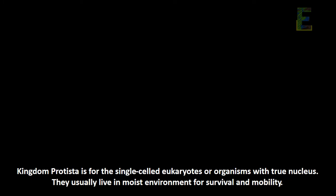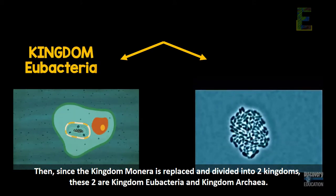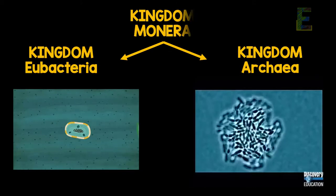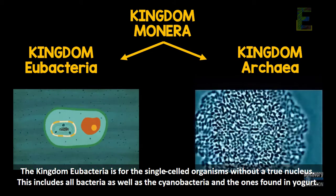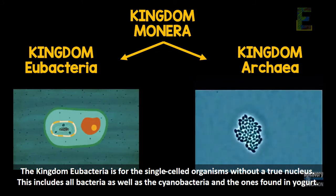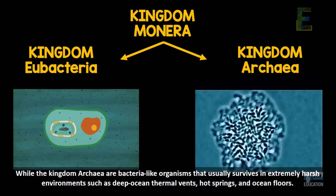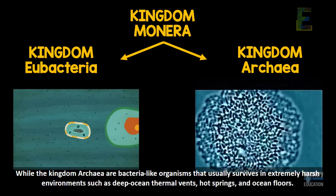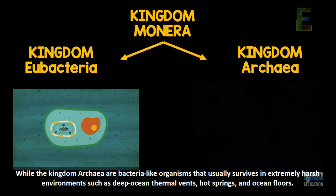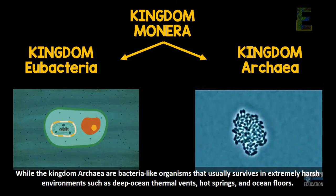They usually live in moist environments for survival and mobility. Since kingdom Monera is replaced and divided into two kingdoms, these two are kingdom Eubacteria and kingdom Archaea. Kingdom Eubacteria is for single-celled organisms without a true nucleus; this includes all bacteria as well as cyanobacteria and the ones found in yogurt. Kingdom Archaea are bacteria-like organisms that usually survive in extremely harsh environments, such as deep ocean thermal vents, hot springs, and ocean floors.